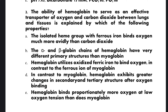A: The isolated heme group with ferrous iron binds oxygen much more readily than carbon dioxide. B: The alpha and beta globin chains of hemoglobin have very different primary structure than myoglobin. C: Hemoglobin utilizes oxidized ferric iron to bind oxygen in contrast to the ferrous iron of myoglobin. D: In contrast to myoglobin, hemoglobin exhibits greater changes in secondary and tertiary structure after oxygen binding. E: Hemoglobin binds proportionally more oxygen at low oxygen tension than does myoglobin.